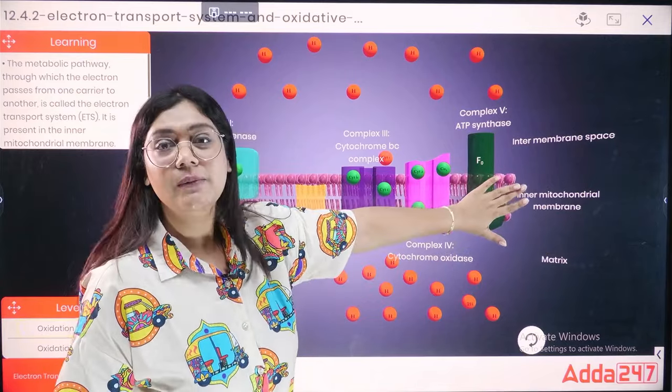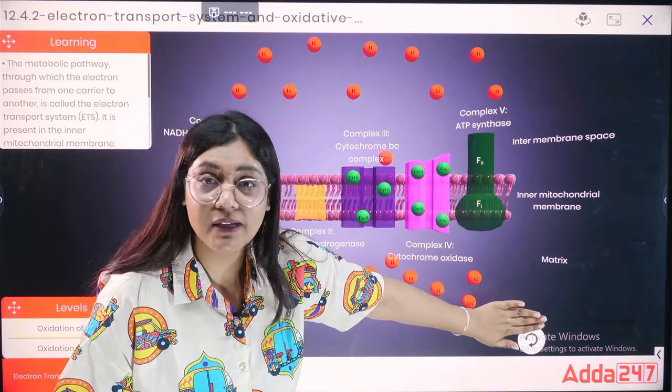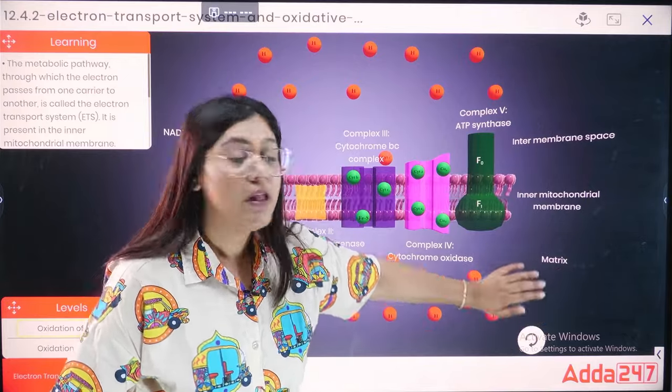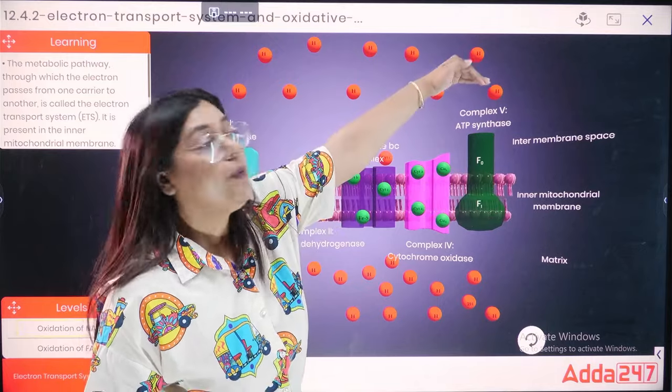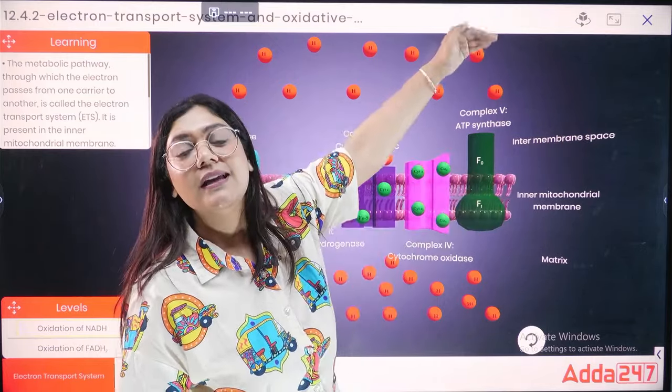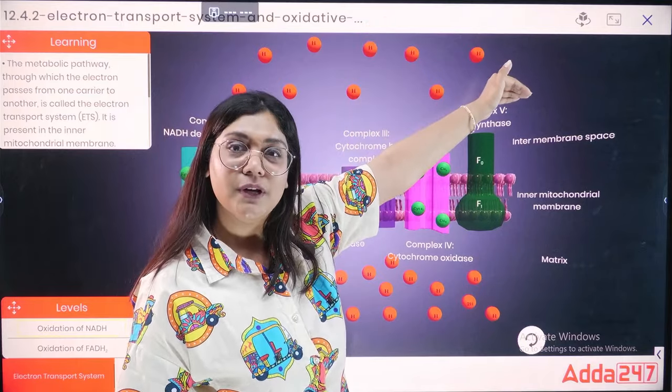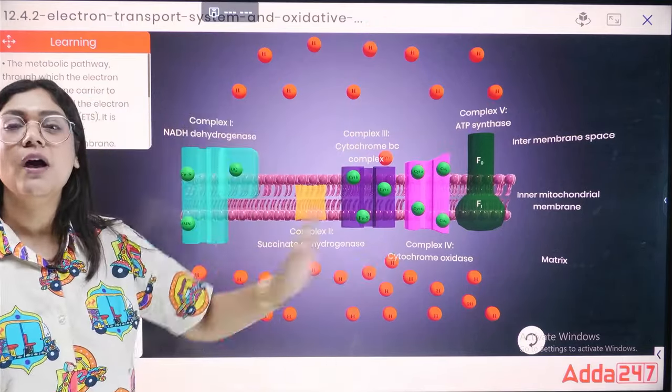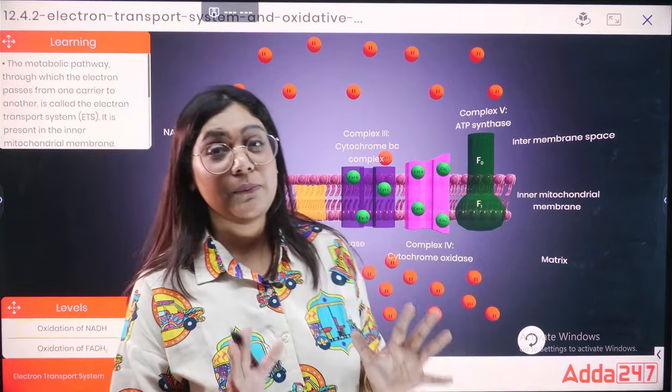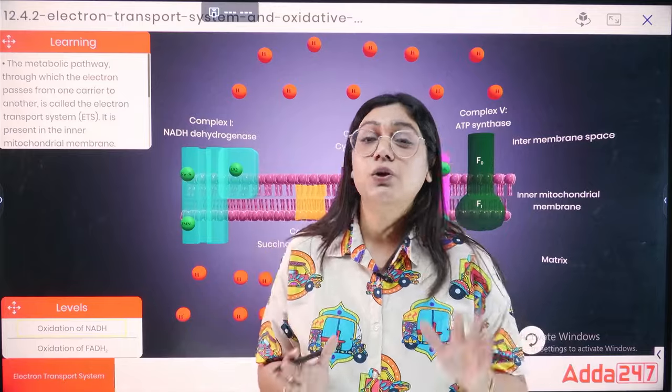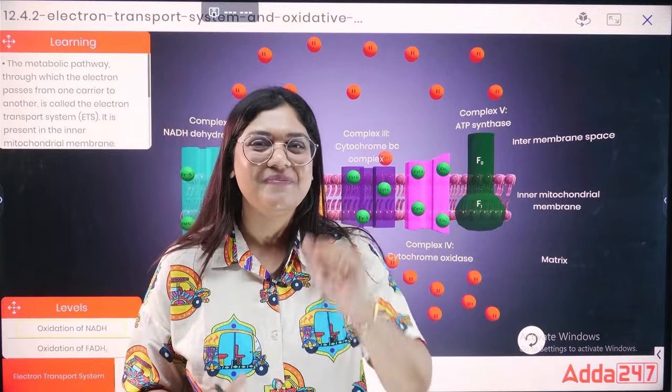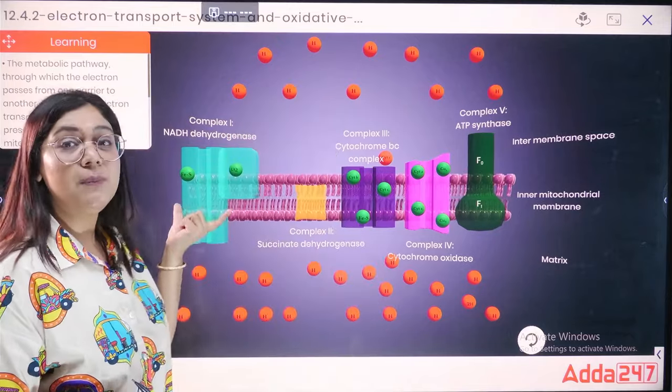This inner mitochondrial membrane is on the side of the matrix. The matrix is on the side of the Krebs cycle and our link reaction. And this inner membrane is on the intermembranous space. So, this inner membrane is on the other membrane, which is the outer membrane of mitochondria. First of all, let's go to this inner mitochondrial membrane. There are five complexes that will help us to make money. In the five complexes, first of all, complex number one is NADH dehydrogenase.